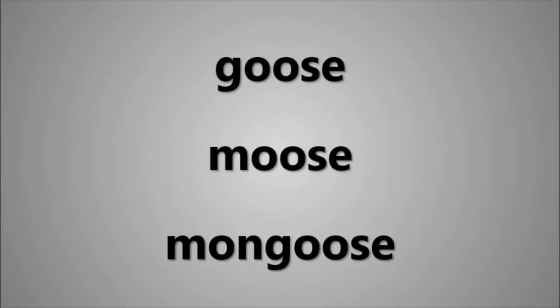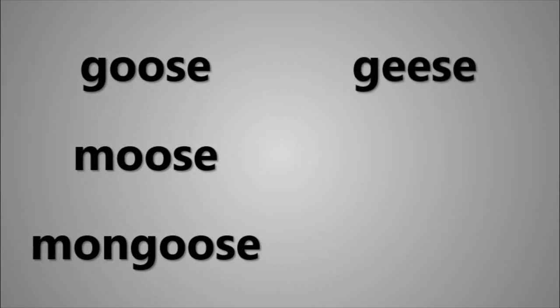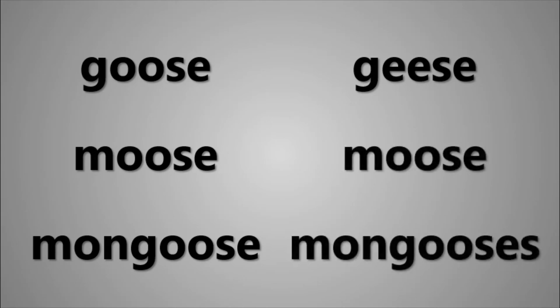Neither moose nor mongoose are Germanic words like goose, so you wouldn't expect them to have the unusual vowel-changing plural seen in geese. But why is the plural of moose, moose, whilst the plural of mongoose is mongooses? Well, it could be related to the type of animal that a moose is. A moose is part of the deer family, and deer, like some other animals in English, is also a word which doesn't change in the plural. That's why it could make sense for moose, like deer and sheep, to be the same in the singular and plural. But it could also be linked to the linguistic history of the words. In Algonquian languages, moose was the same in the singular and the plural, so why not extend this to English?